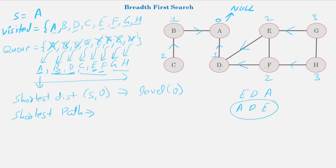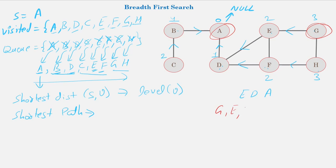We can also find the shortest path using the parent pointers. Suppose the target vertex is E: go to E, then the parent of E is D, then the parent of D is A, and A is the source, so the path is E → D → A, or in reverse: A → D → E. For the path from A to G: go to G, parent of G is E, parent of E is D, parent of D is A — so the path is A → D → E → G.